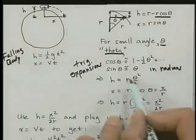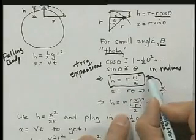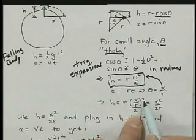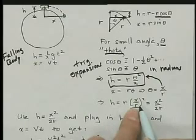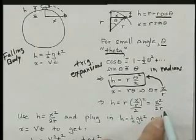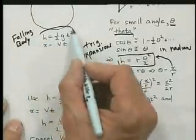And now we can write, we can put in this equation, we can plug in the value for theta, which is x over r. We square that, so we have x over r squared, r, and then 2 is downstairs. r squared downstairs cancels the r upstairs, so we have an r downstairs, so we have x squared over 2r.